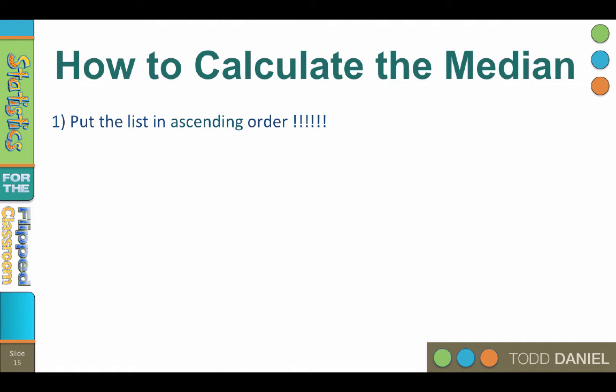To calculate the median, you must first put your data in ascending order. This is not optional. Once you have arranged your data in ascending order, you can then count halfway through the distribution and find the middle number.